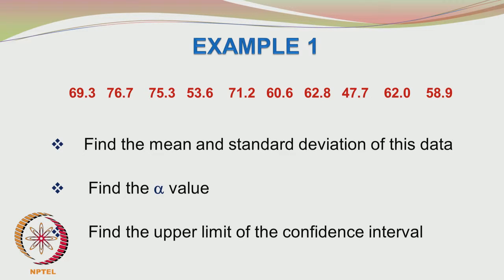To summarize, you have to find the mean and standard deviation of the data given, the alpha value, and the upper limit of the confidence interval. Note that the data is not in ascending order, but you can still compute the median and compare it to the mean.